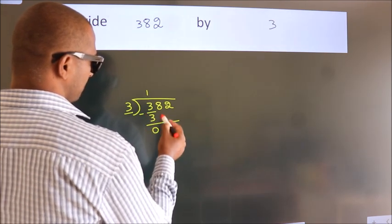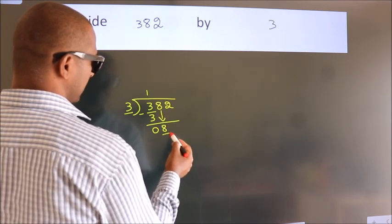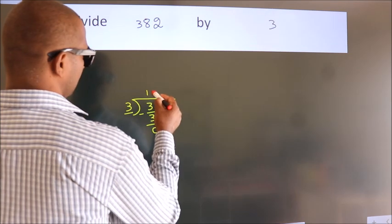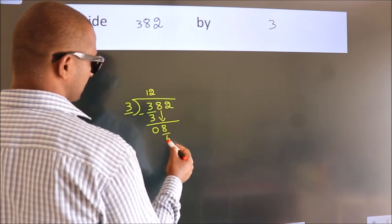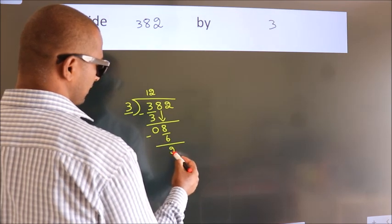After this, bring down the beside number, so 8 down. A number close to 8 in 3 table is 3 times 2, 6. Now we subtract, we get 2.